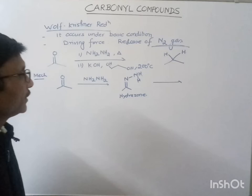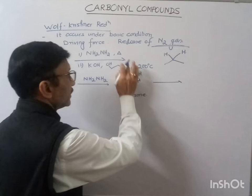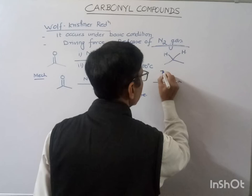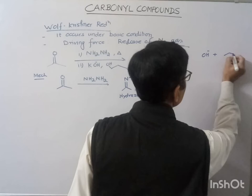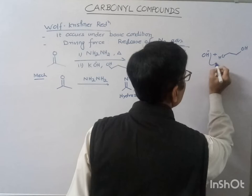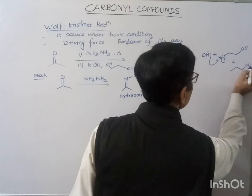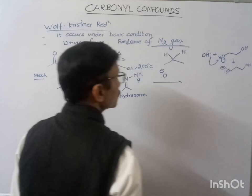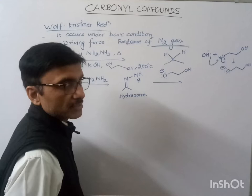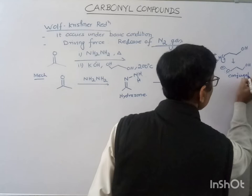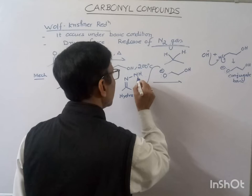This H is the acidic one, and it can be removed by the strong base. Here, this strong base — ethylene glycol in the presence of KOH — this hydroxide ion may take this H from the hydrazone, and finally, nitrogen is having the negative charge.